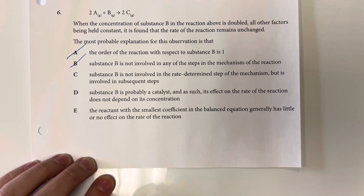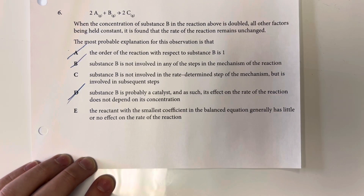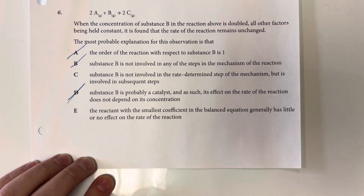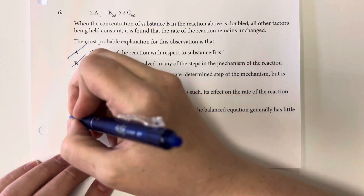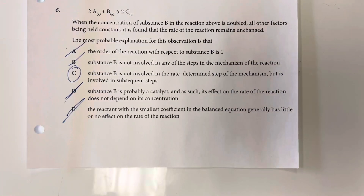Option E suggests substance B is probably a catalyst, meaning the effect on rate does not depend on its concentration — that is not true. Catalysts very much depend on concentration; increasing the amount of catalyst present increases the rate. Option F — that the reactant with the smallest coefficient has little effect on rate — is completely incorrect and has nothing to do with anything, so it should be eliminated immediately.